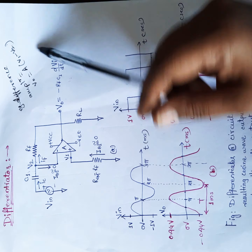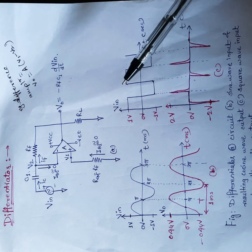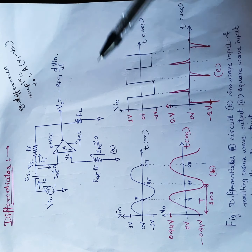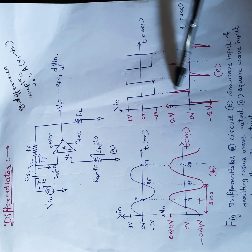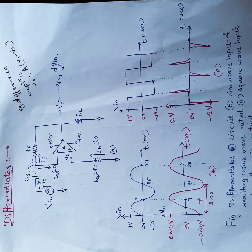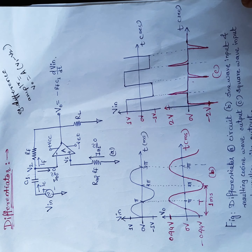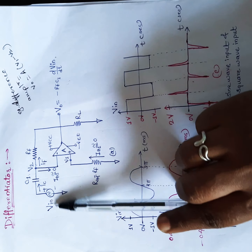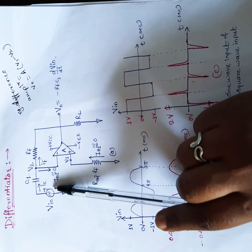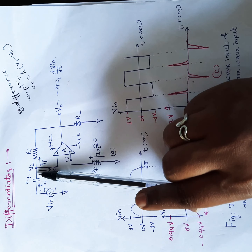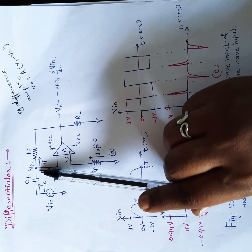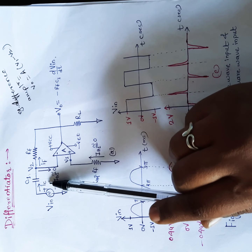We will find out the equation for the differentiator to verify that the output is indeed the differential of the input. We can also see the input-output waveforms: when input is a sine wave, and when input is a square wave, the output will be spikes. To find the output voltage, because of the vin signal, some current will be flowing through the capacitor — we denote this as the input current ic.